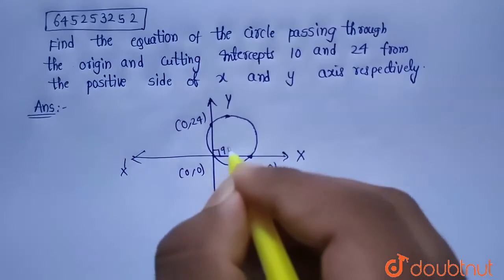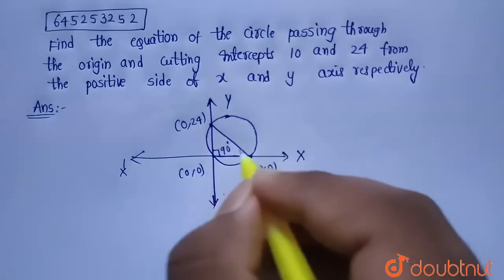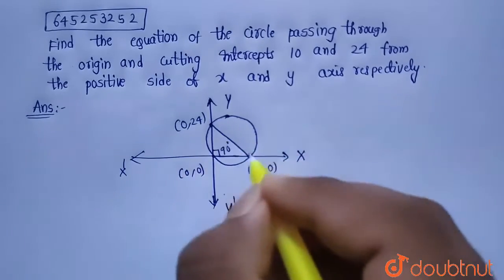Now we know that this is 90 degrees, and if you join these two points, it is nothing but a semicircle because the angle in a semicircle is 90 degrees. So this should be the diameter.